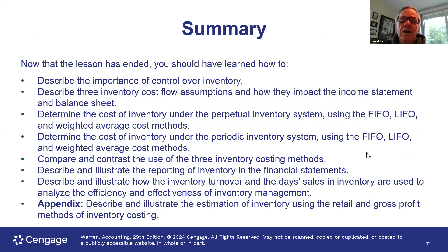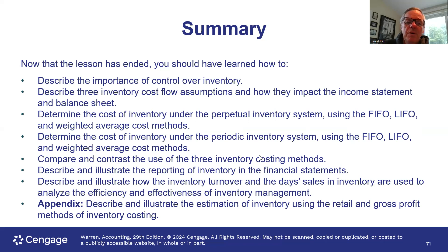That concludes our study of Chapter 6. At this point you should be able to: describe the importance of control over inventory; describe the three cost flow assumptions and how they impact the income statement and balance sheet; determine the cost of inventory in the perpetual system under FIFO, LIFO, and weighted average; determine costs under the periodic method as well; contrast the three inventory costing methods; illustrate the reporting of inventory on financial statements including the lower-of-cost-or-market rule; and describe and illustrate the estimation of inventory using the retail and gross profit methods.